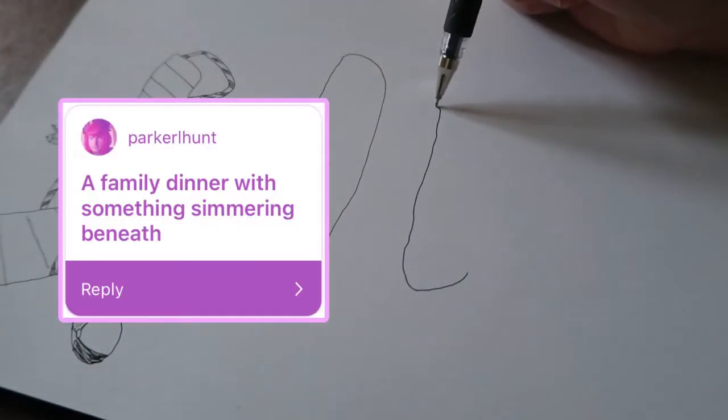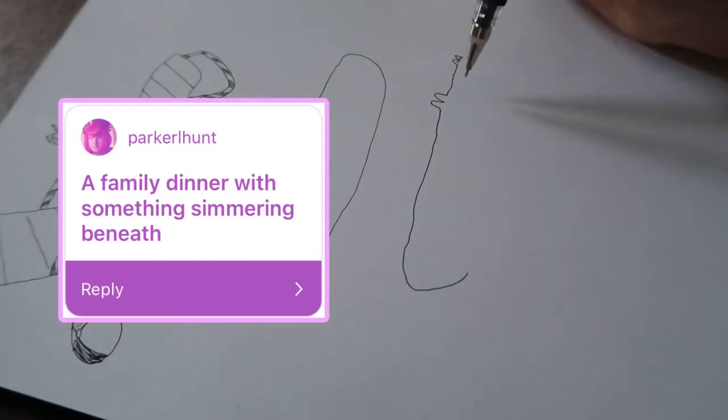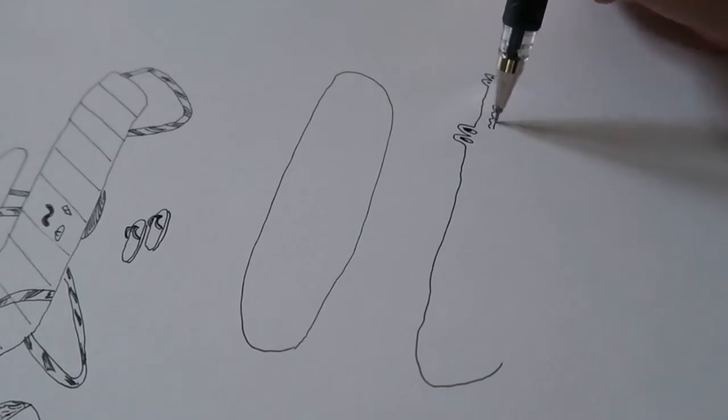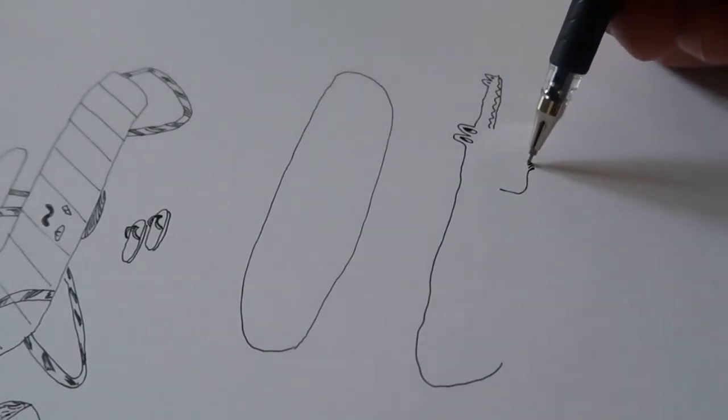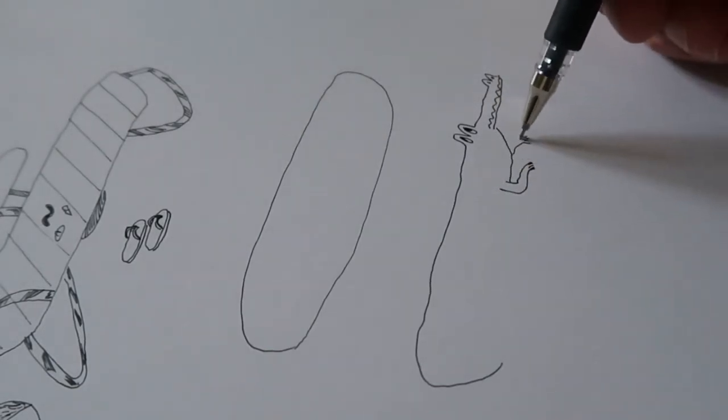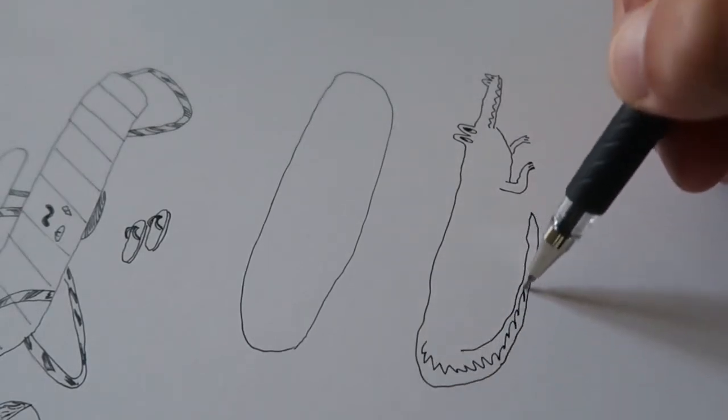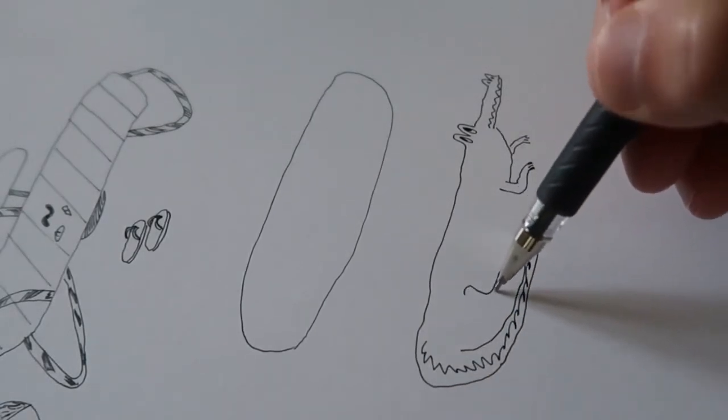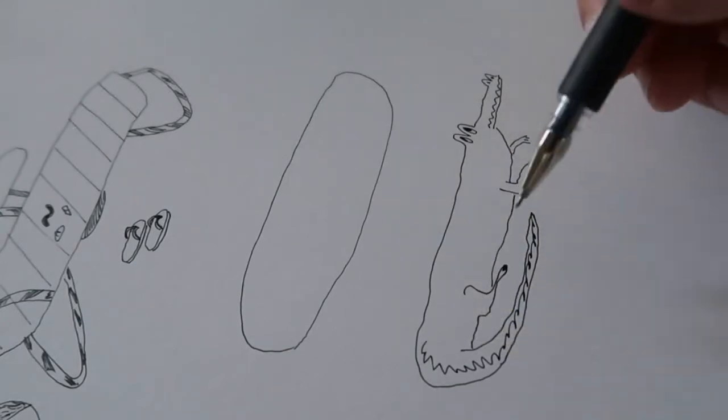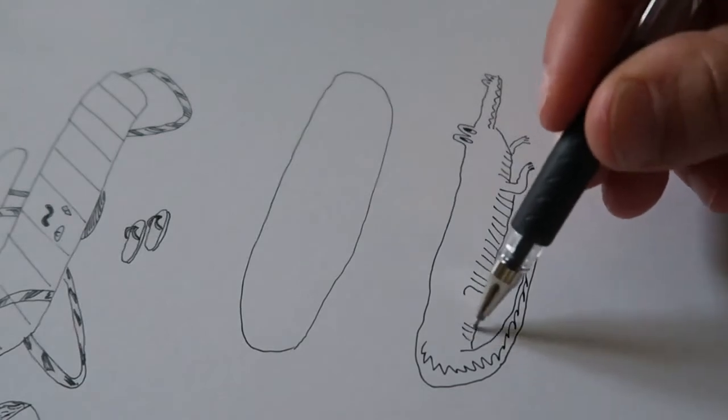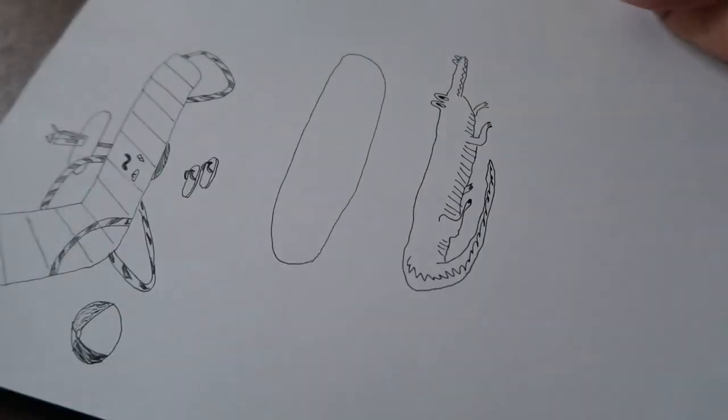The next one is from Parker Hunt. He sent in a lot of really fun ones that I'm looking forward to diving into. This first one was a family dinner with something simmering underneath. And the first thing that came to mind was quite literally just that. Like I was like, oh, I'll draw a pot of soup on a hot plate underneath the dining room table. And then, you know, I really pushed myself creatively. I went with an alligator.